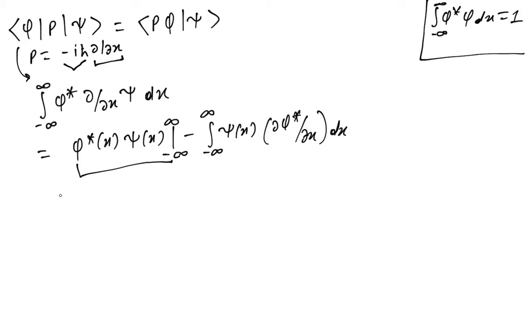This boundary term should be zero because we know phi and psi are square integrable, which means that integral of phi star phi dx equals 1, and similarly for psi. It really cannot extend up to infinity. At infinity it should go to zero. So this goes to zero. If we just call this operator d, we can show that d phi psi equals minus psi d phi.